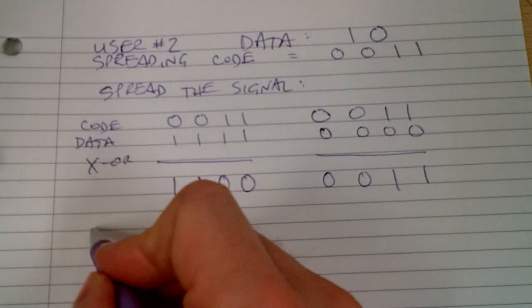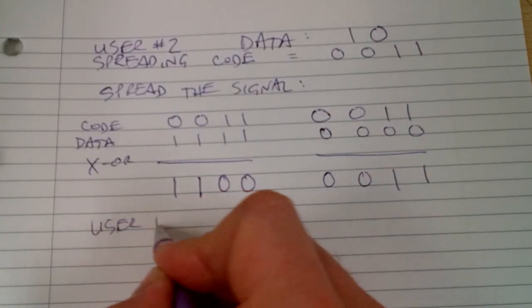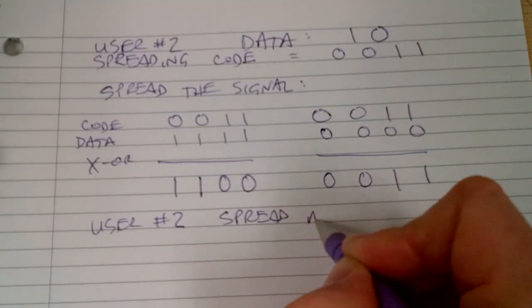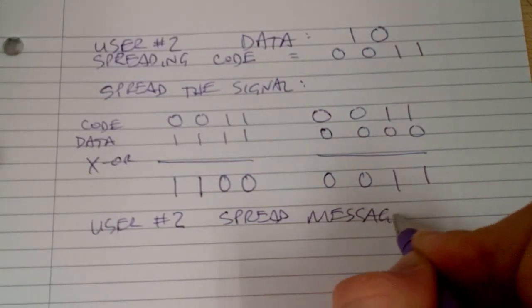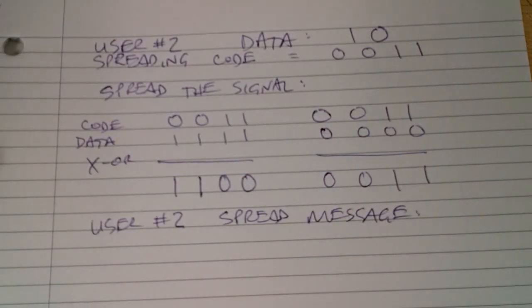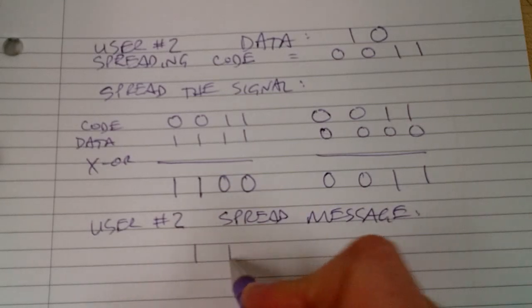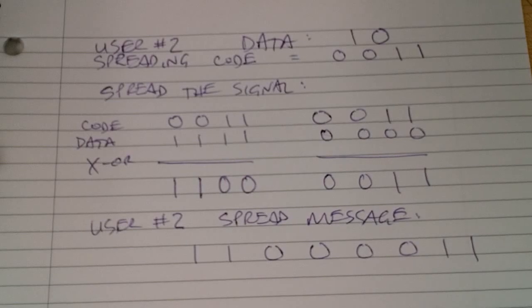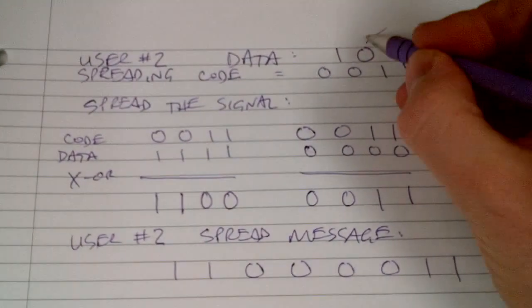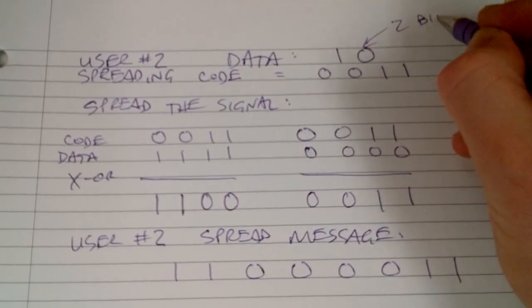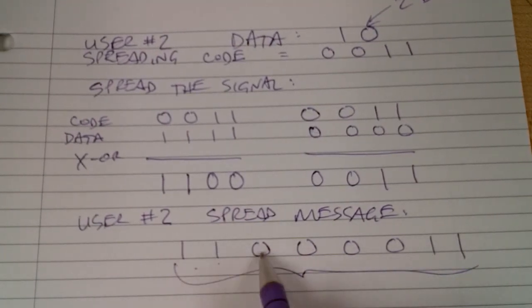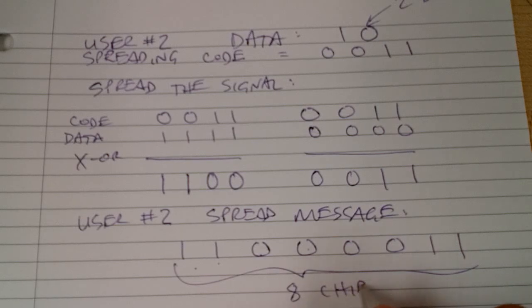So then we have user number two's spread message, which works out to be one, one, zero, zero, zero, zero, one, one. Just like the first time, we started out with two bits and we end up with eight chips.